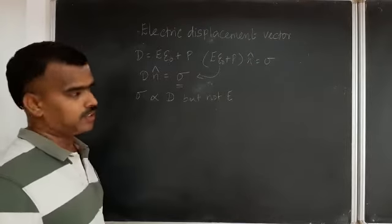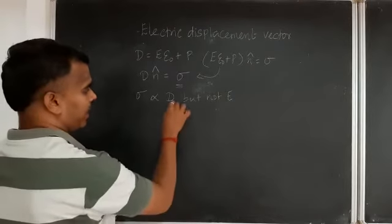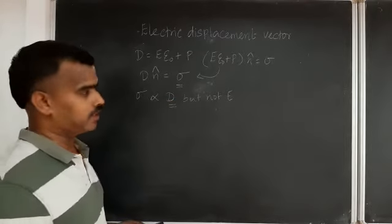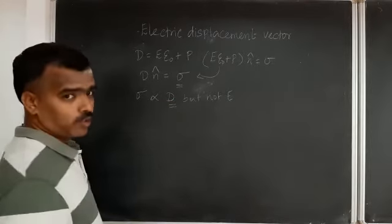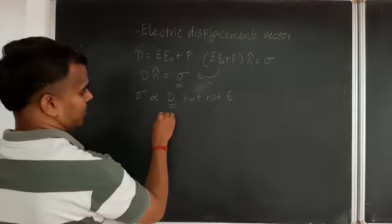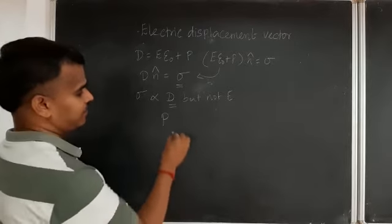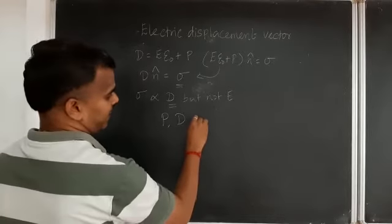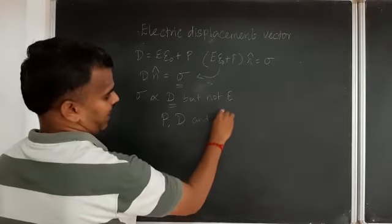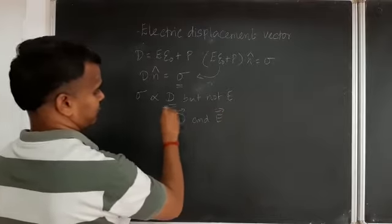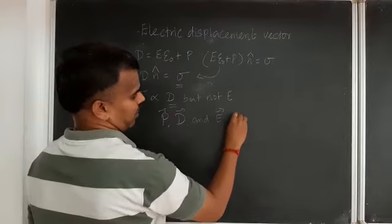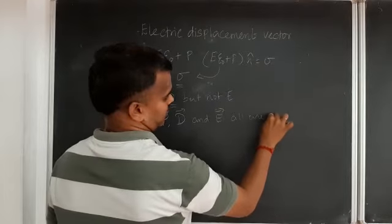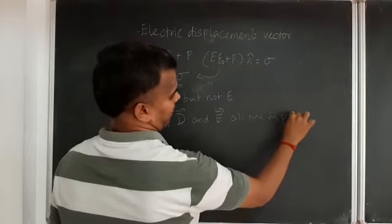So this is a major difference when introducing a dielectric — we will have the electric displacement vector. Therefore, what we can conclude is: polarization P, electric displacement vector D, and the applied electric field, all are in parallel.